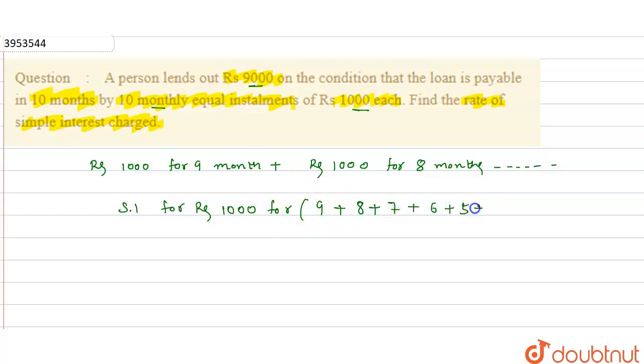2, 1, right? Yarni ki kitnay mahine ho gaya, that is equals to 45 months. Ye sum kitna ho gaya, 45. Yarni ki simple interest for rupees one thousand for 45 months, kitnay mahine ke liye, 45 months ke liye. Find out kertate hai.